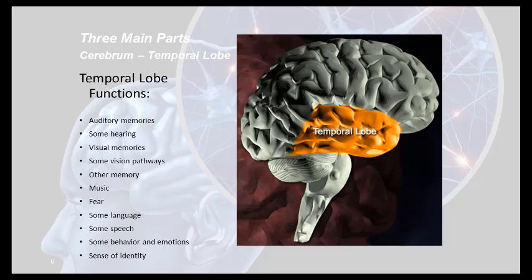The temporal lobe handles memory, hearing, vision, language, and music. Fear is processed in the amygdala and the hippocampus, which are parts of this lobe. Some behavior, the emotional connections with memory, and our sense of identity through the insula — which is right underneath the parietal lobe, in towards what we'll see later as the limbic area — are all processed here.